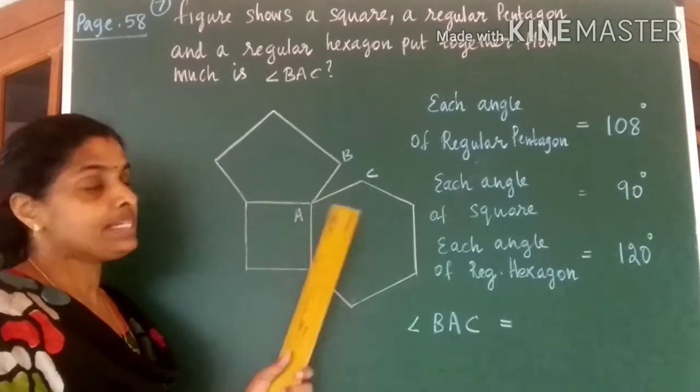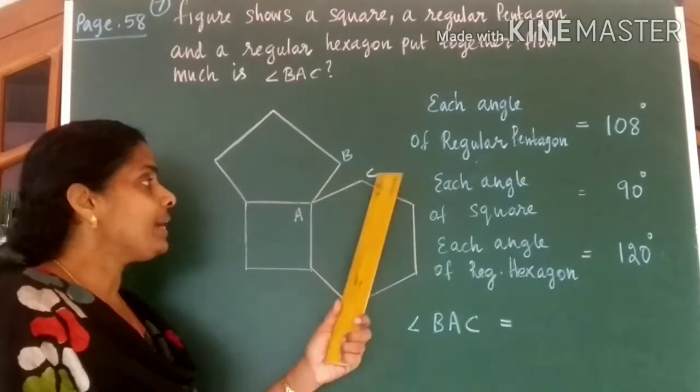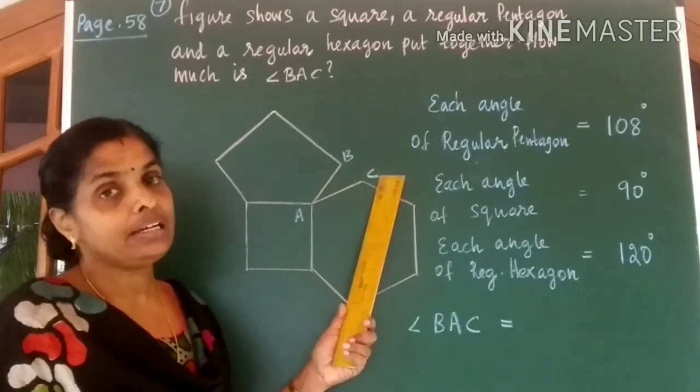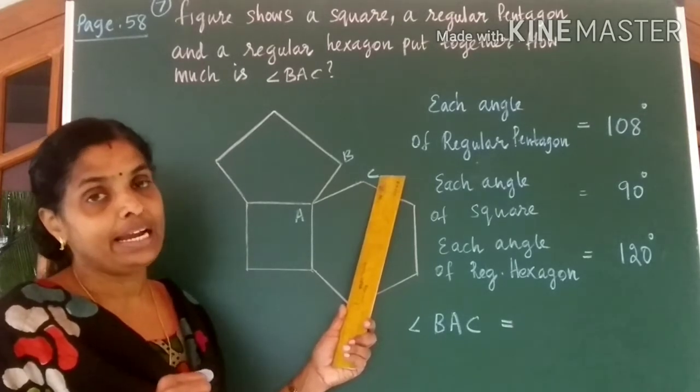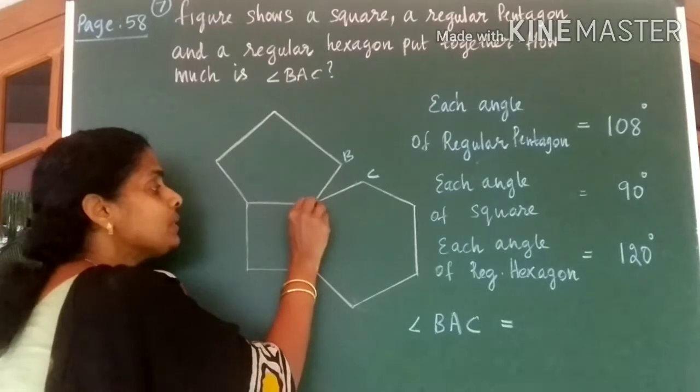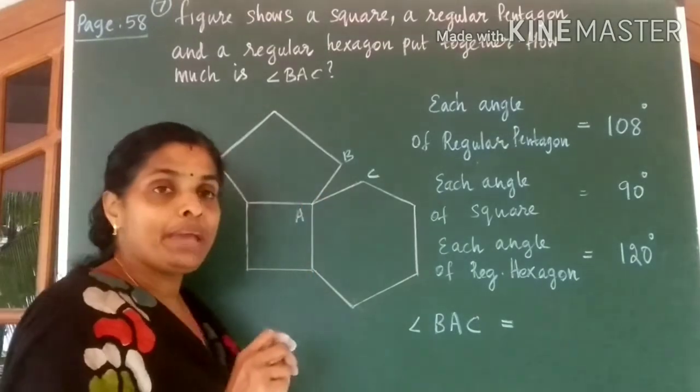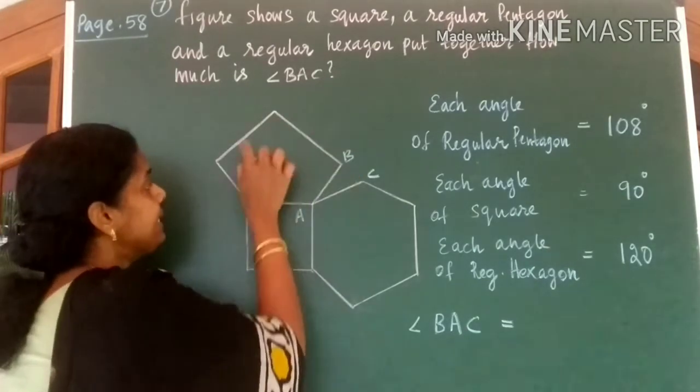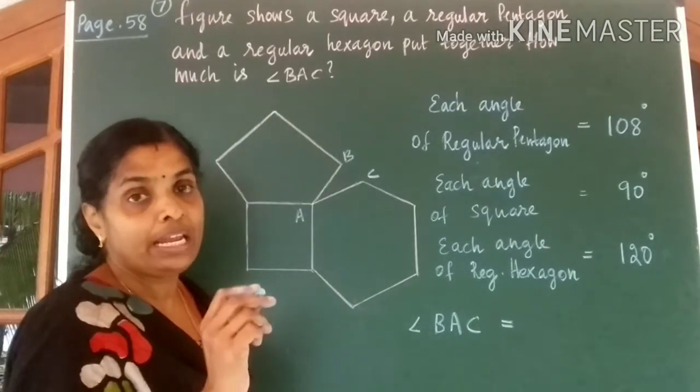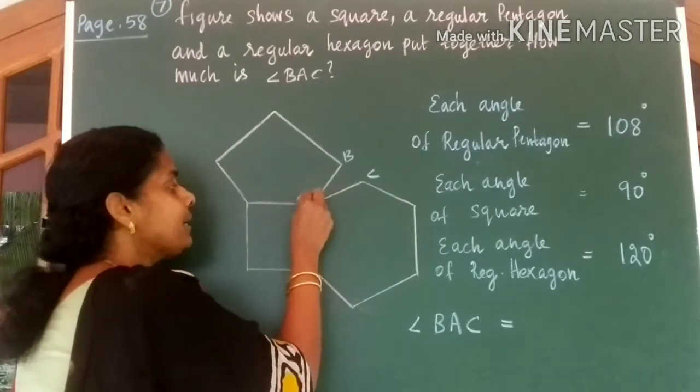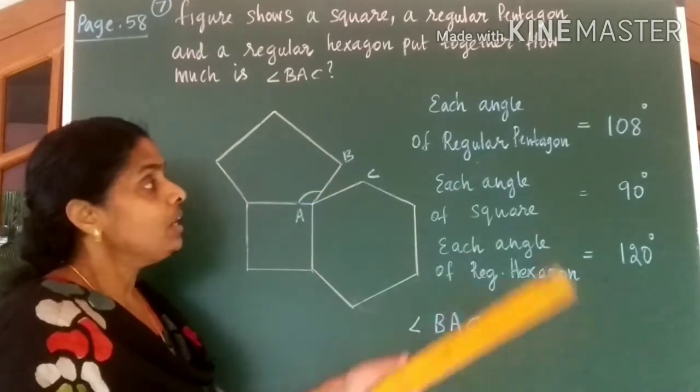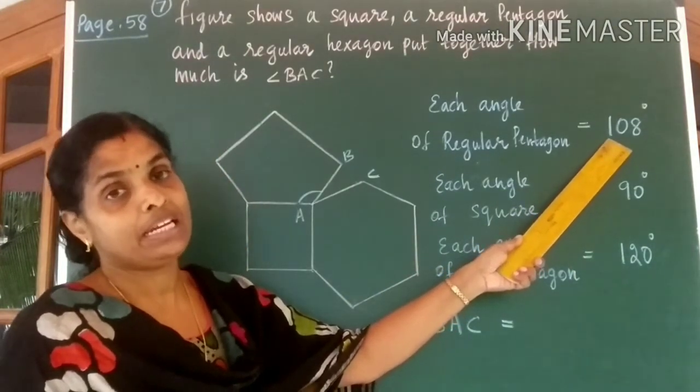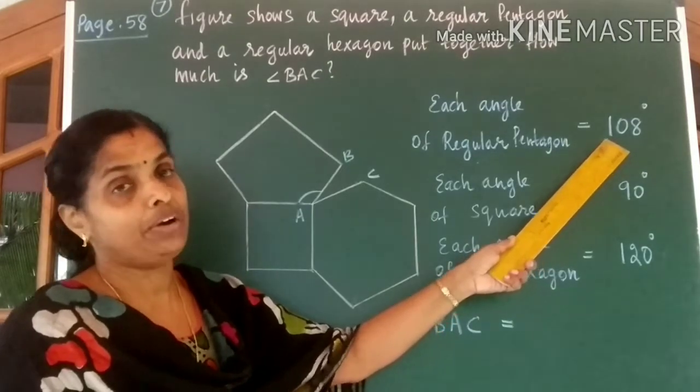Question is how much is angle BAC? Here again we use the same idea. Angle around a point is equal to 360. So angle around this point A would be equal to 360 degrees. Now this is a 5 sided figure, a regular pentagon. So what is each angle of a regular pentagon? We know each angle of a regular pentagon is 540 divided by 5 which is equal to 108.